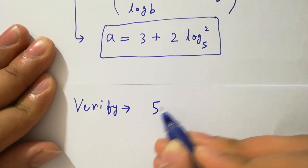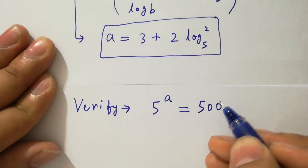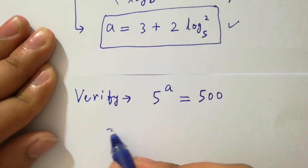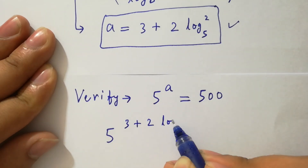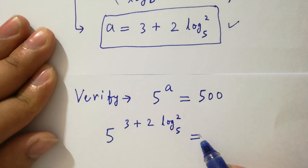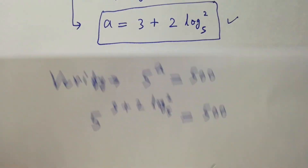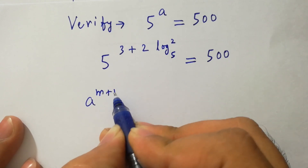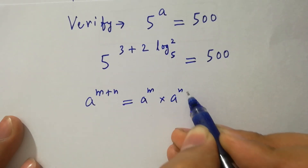To verify: 5 to the power a equals 5 to the power (3 plus 2 log 2 to the base 5) equals 500. Since a to the power (m plus n) equals a to the power m times a to the power n,